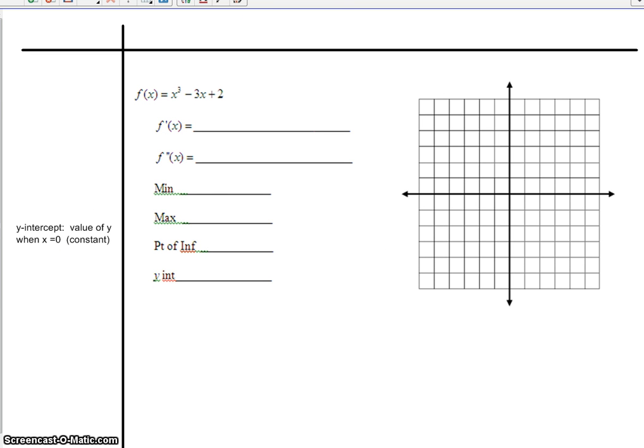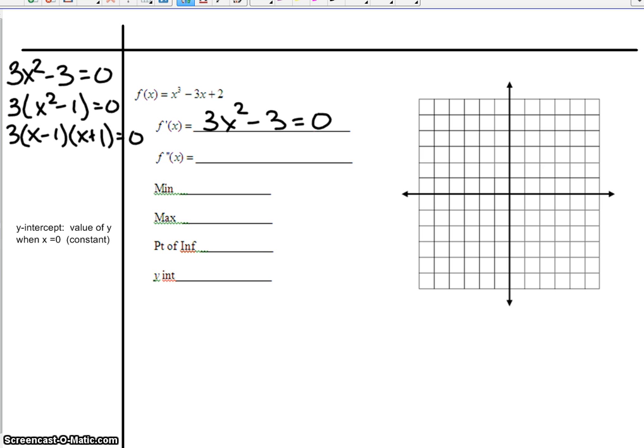Alright, one more quick example. So, again, start out, first derivative. Set it equal to 0. And then we're going to solve it out. So, I'm going to factor out a 3, and just like in our first example, again, I get that difference of squares. So, I'll get x equal 1 or x equal negative 1.